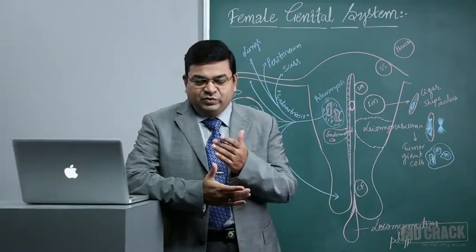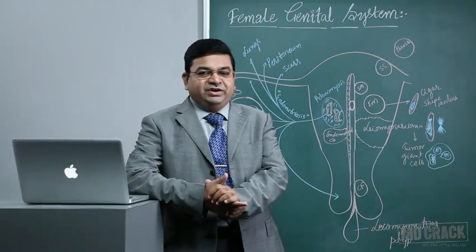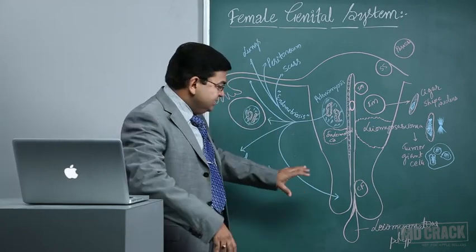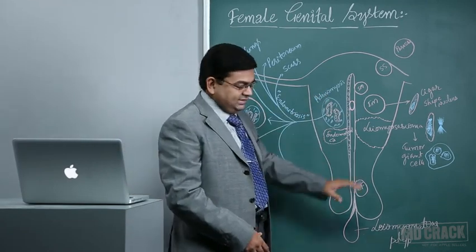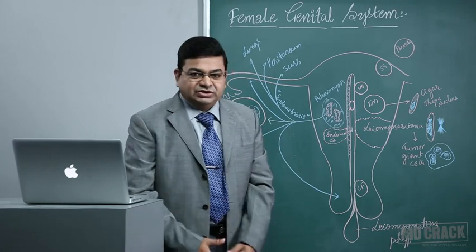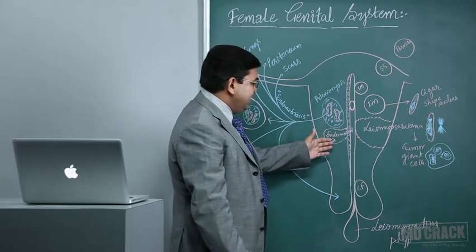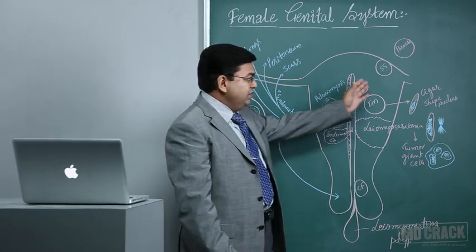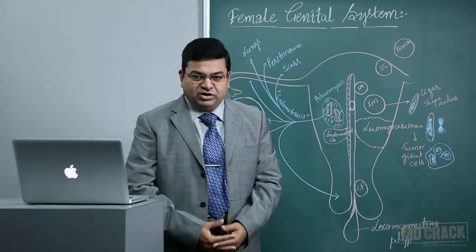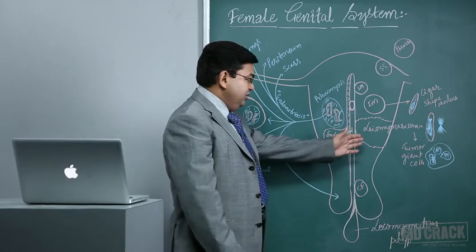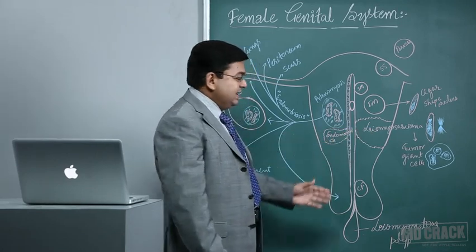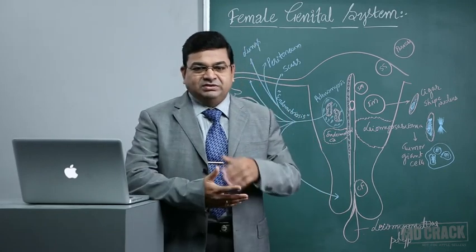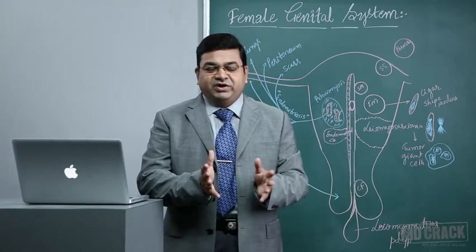Welcome. Today we cover the very interesting and important topic of the female genital system: disorders of the uterine body, the uterine corpus. There are many conditions including benign conditions like adenomyosis, endometriosis, and leiomyomas, as well as malignant conditions like leiomyosarcomas and endometrial carcinomas. It is a vast subject and I will try to condense it in this video presentation.